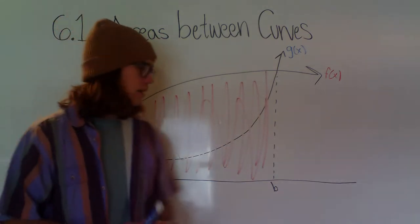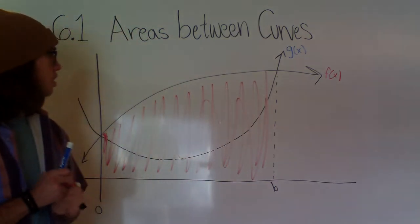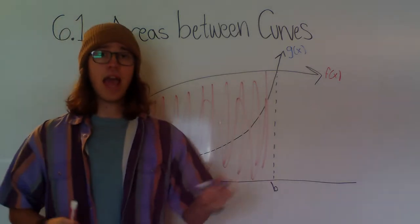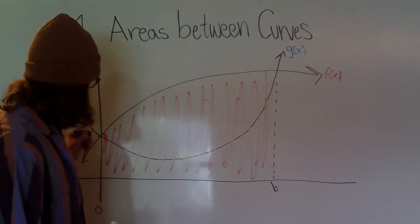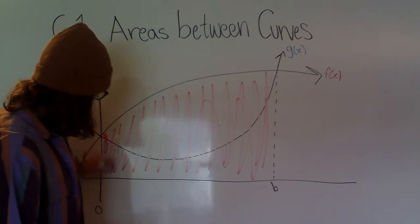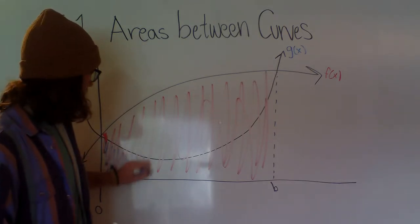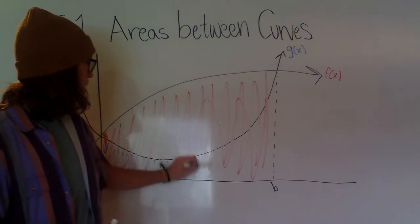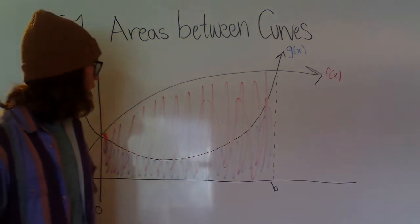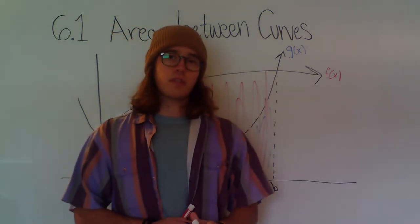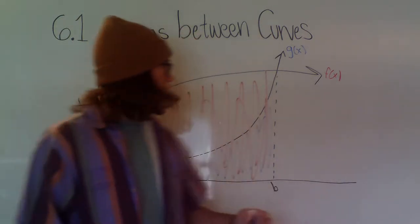And then we look at g of x. That's going to be anything below g of x and stops at the x-axis. So we'll get some overlap here, and blue and red makes purple. And then we see it just looks like these are separate areas. It almost looks like we could subtract them, right?